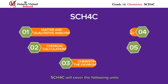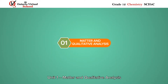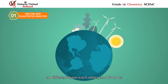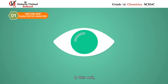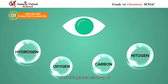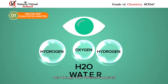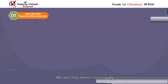SCH4C will cover the following units. Unit one: matter and qualitative analysis. What makes the things around us so different from each other and from us? In this unit we take a very close look at what things are made up of and how these elements react together to create new things with different physical and chemical properties.